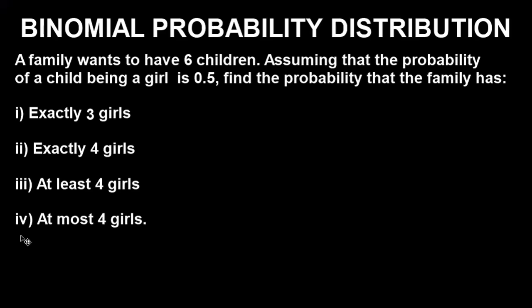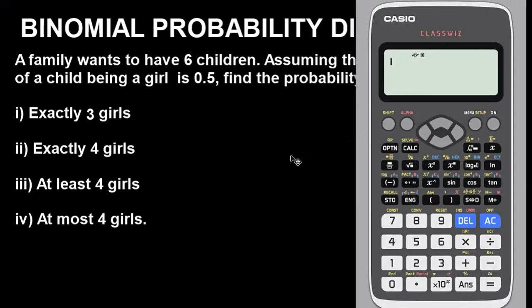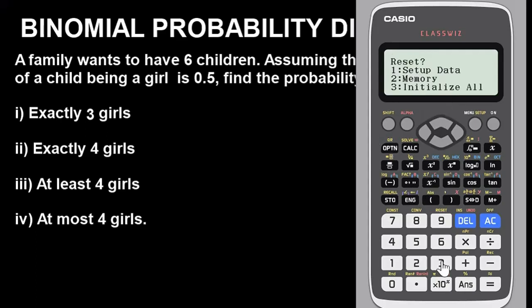Now let's get the Casio calculator and go into the details of this video. The very first thing you have to do is clear the calculator — put it in default mode to remove whatever previous values or modes you might have stored. To clear, press Shift, then CLR, select option 1 (Initialize All), and confirm twice. The calculator is now in default mode.